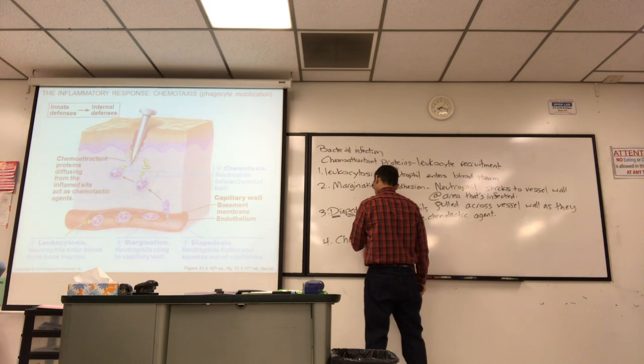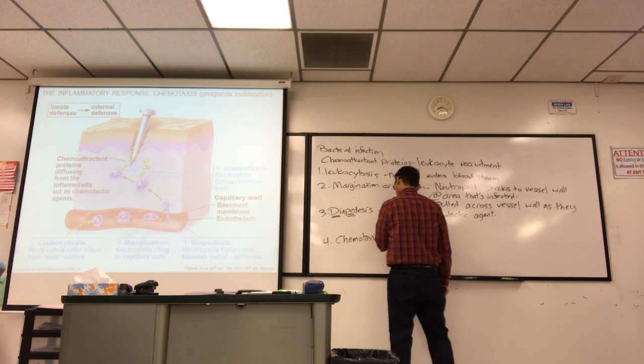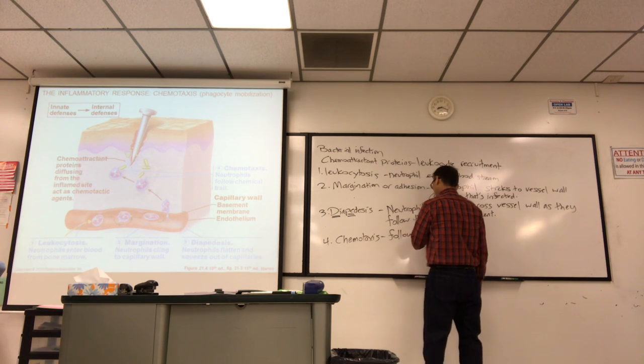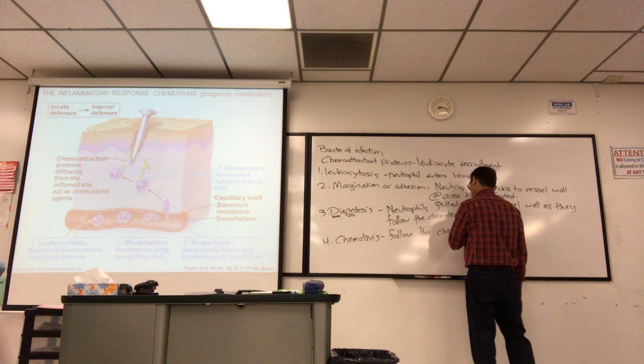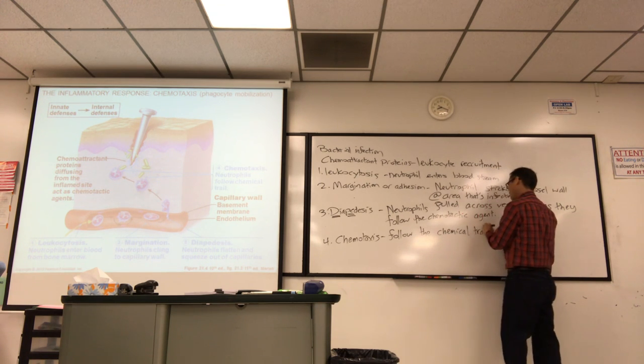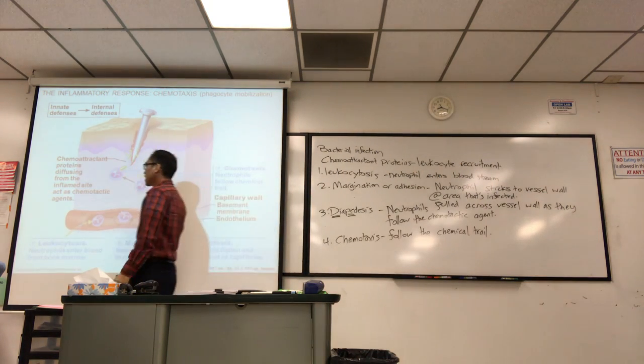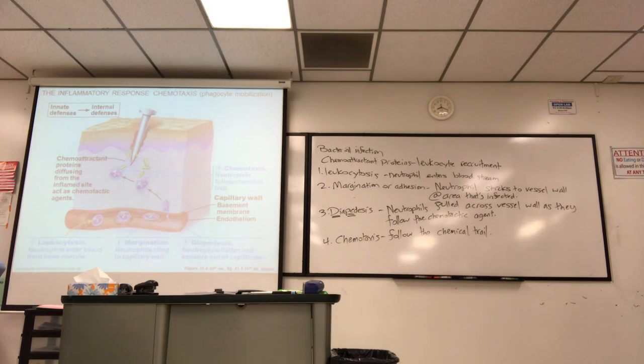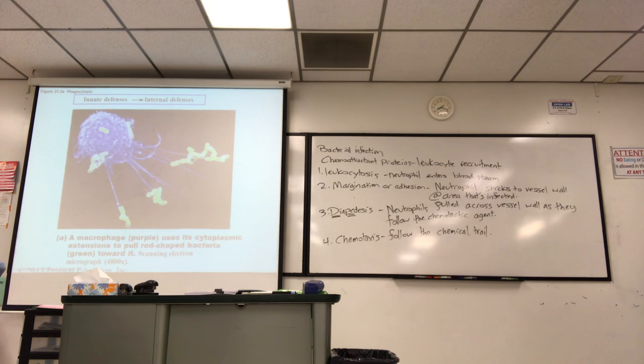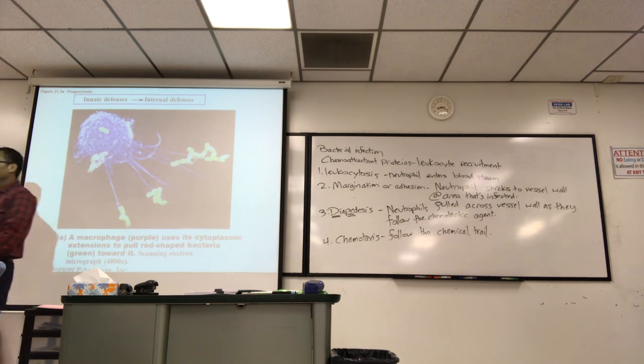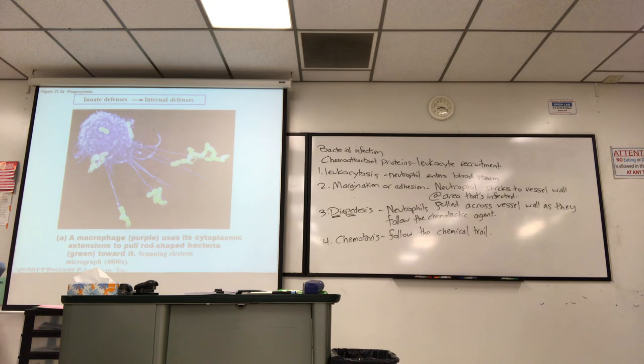So it really starts here, diapedesis. Neutrophils pull across the vessel wall as they follow this chemotactic agent. Yeah, that process is called chemotaxis. They kind of put it as step four. It really starts at step three. Just follow that chemical trail. So you've led the leukocytes to the area. But now the white blood cell has to do its job.